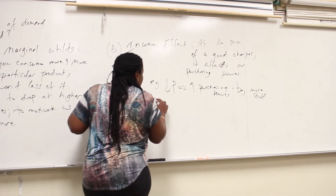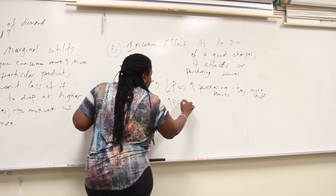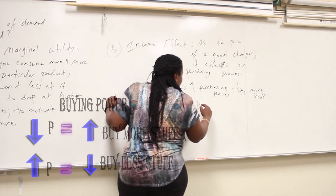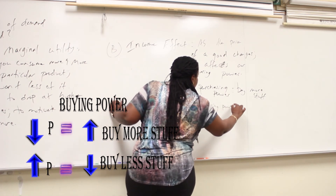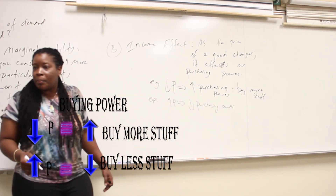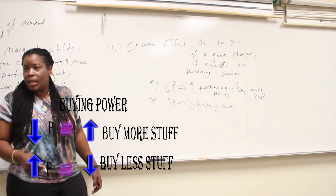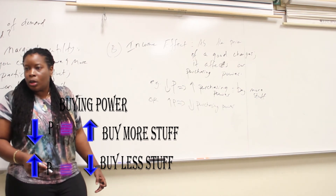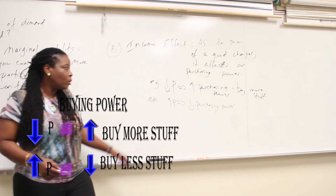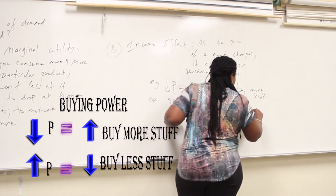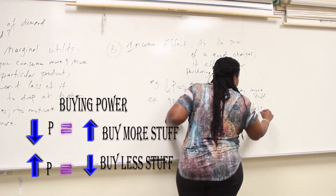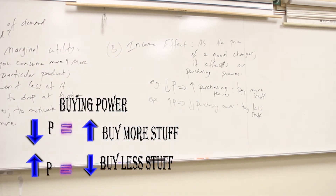You can flip this around. Raise up the price and this will lower purchasing power. So if the price of the banana had gone up to $10, the only thing you could buy is one banana. Increase the price, lowers our purchasing power, so you buy less stuff. That's the income effect — it also explains the law of demand and why the demand curve is downward sloping.